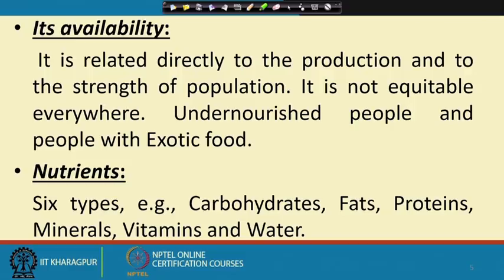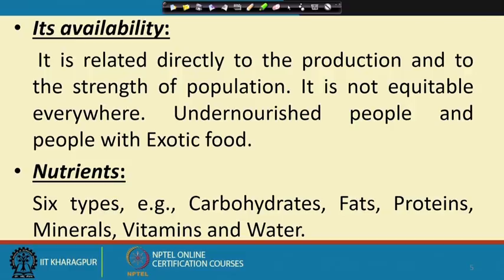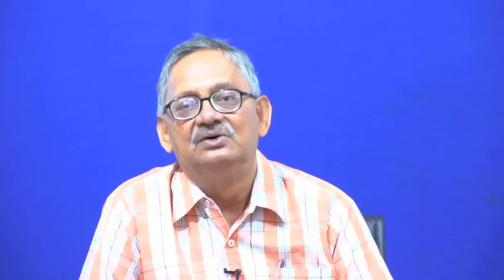So the 6 basic nutrients are: carbohydrate, fat, protein, minerals, vitamins, and water. These are the 6 basic nutrients required by the body — that is why food should be available to everybody for their living and sustenance.